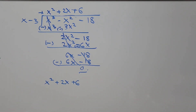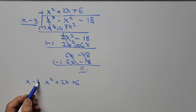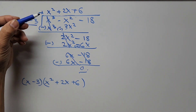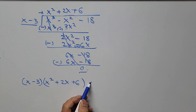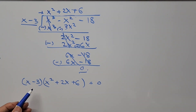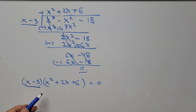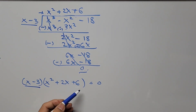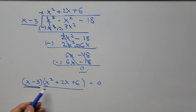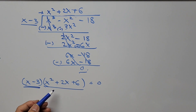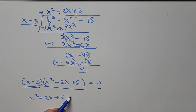Going back to our equation, the other factor is x squared plus 2x plus 6. So we have (x minus 3)(x squared plus 2x plus 6) equals 0. To find the remaining two roots, we set the quadratic factor equal to zero: x squared plus 2x plus 6 equals 0.